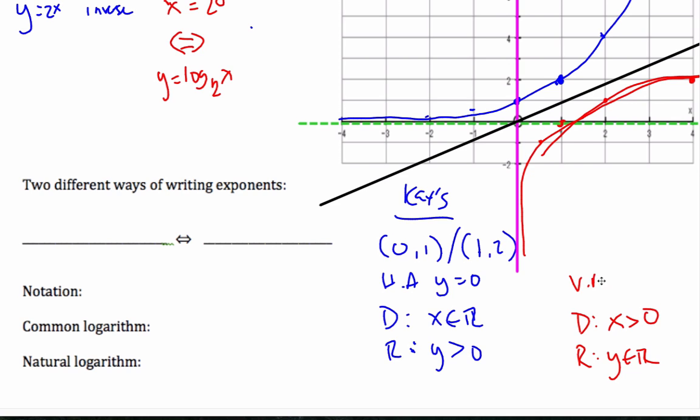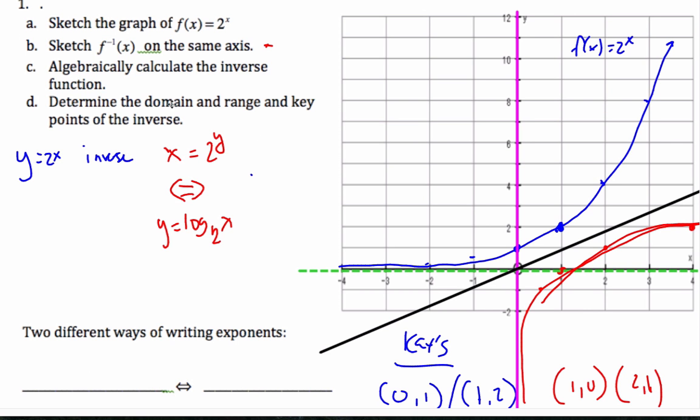There is a vertical asymptote at x equals 0. Again, switching x and y. And key points are (1, 0) and (2, 1). I'll just switch in my x and y's. And so there's a clear relation between logarithms and exponentials.